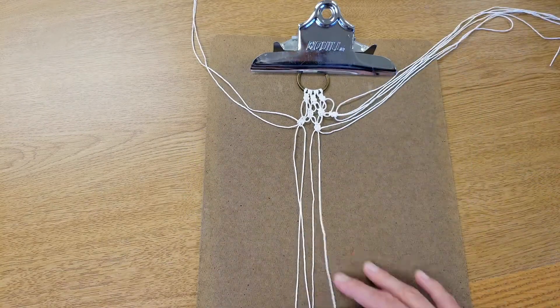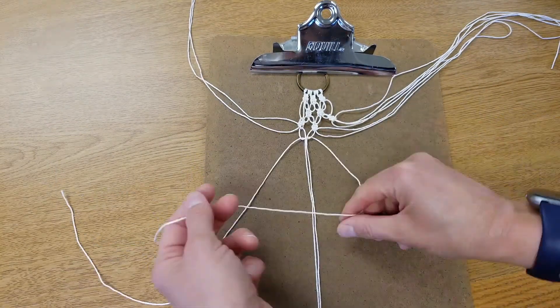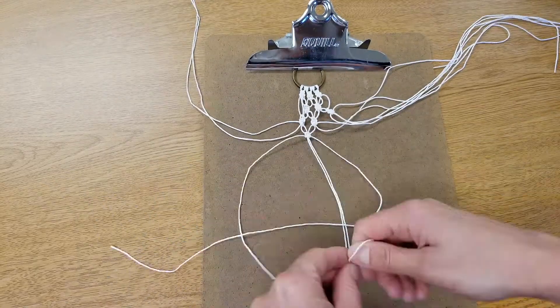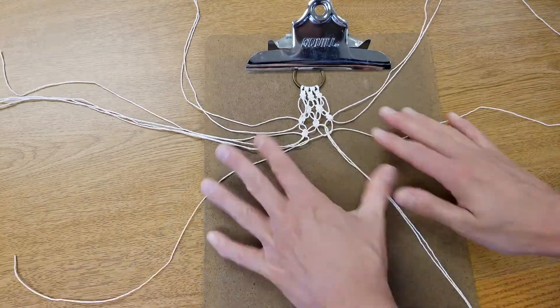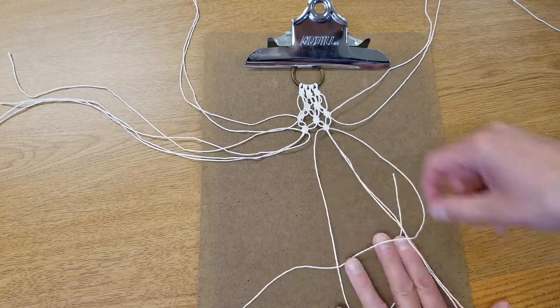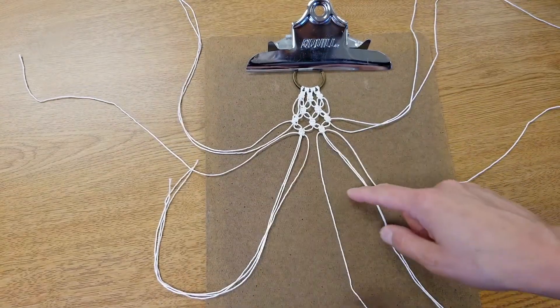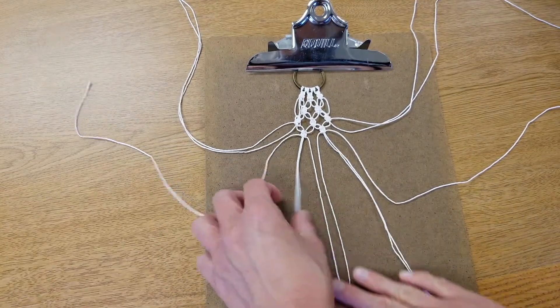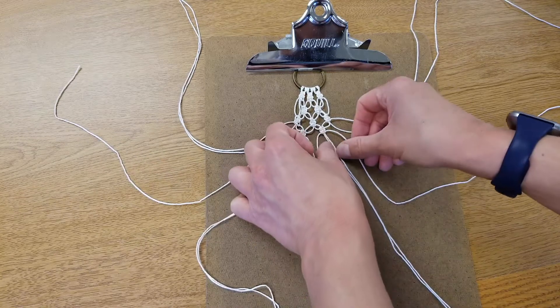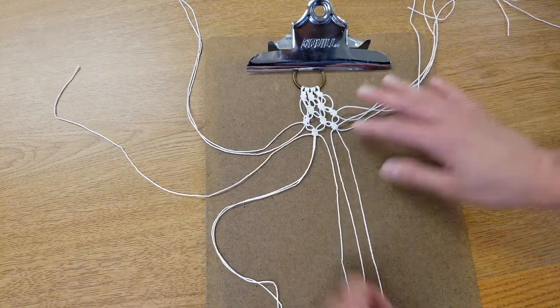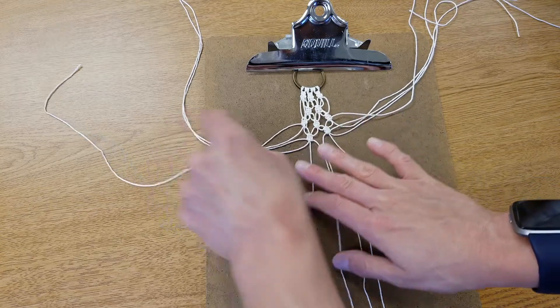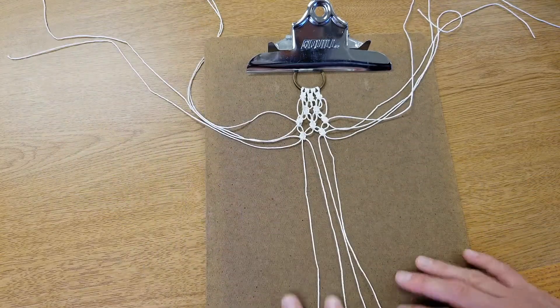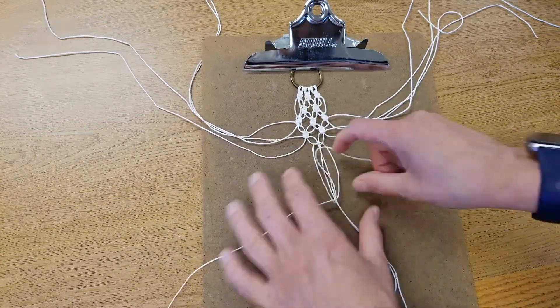For the fourth row we are back to doing two sets of two square knots. And now we're in the home stretch! For the final row you will be creating one set of two square knots. Grab the rightmost strand from the first knot and the leftmost strand from the second knot, and grab the cords on either side and do your two square knots.